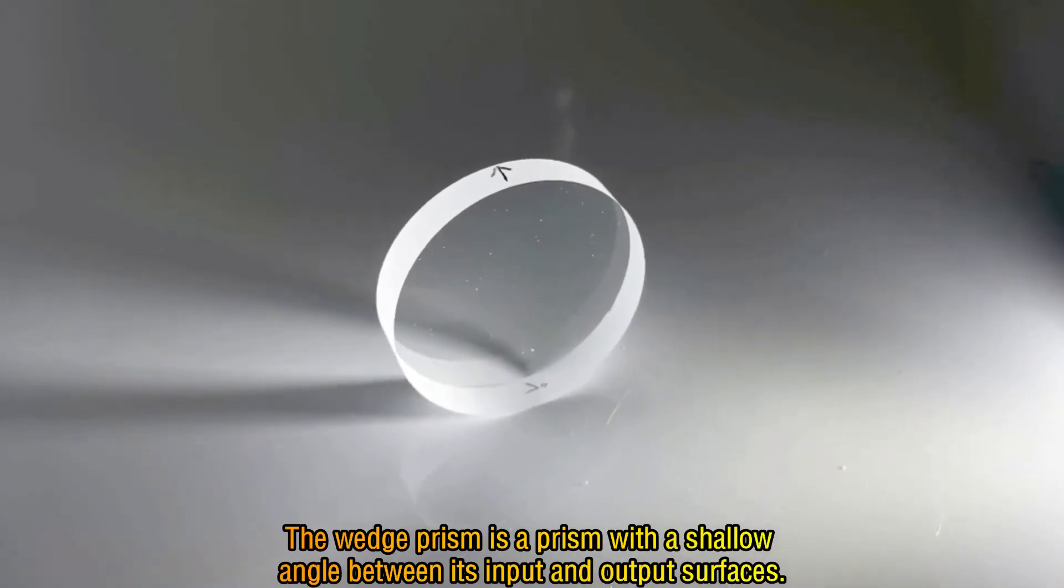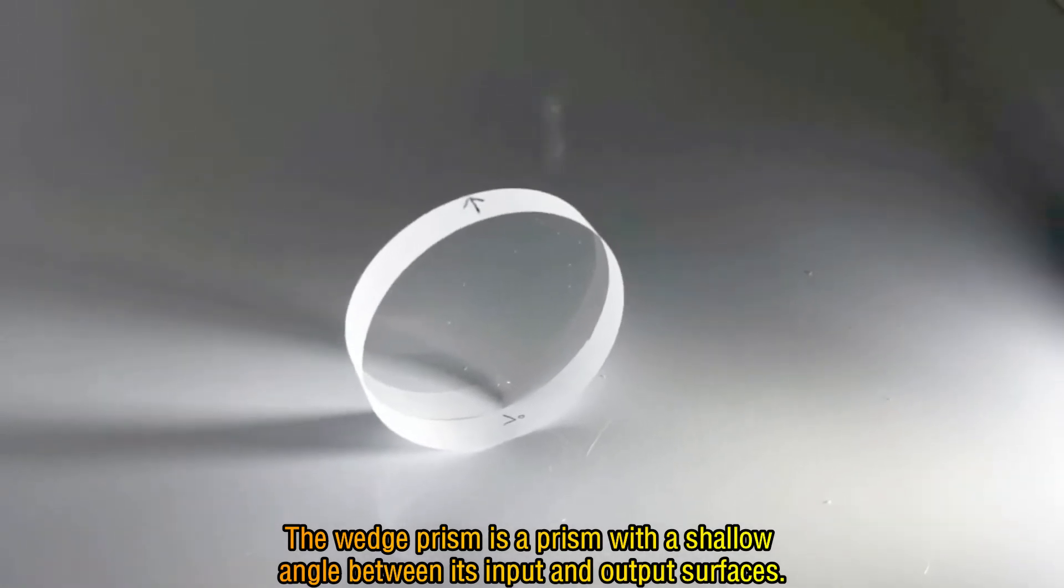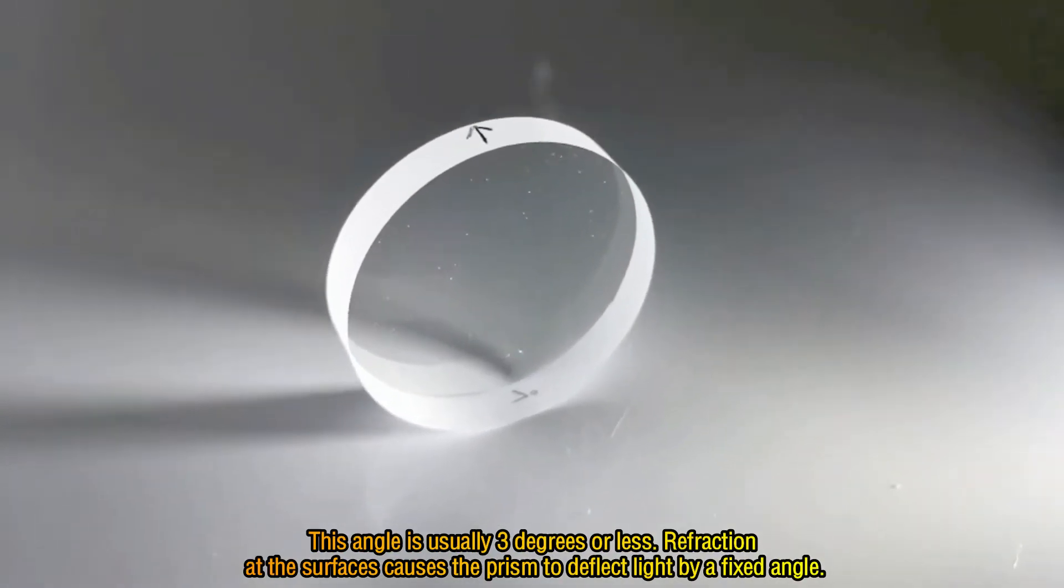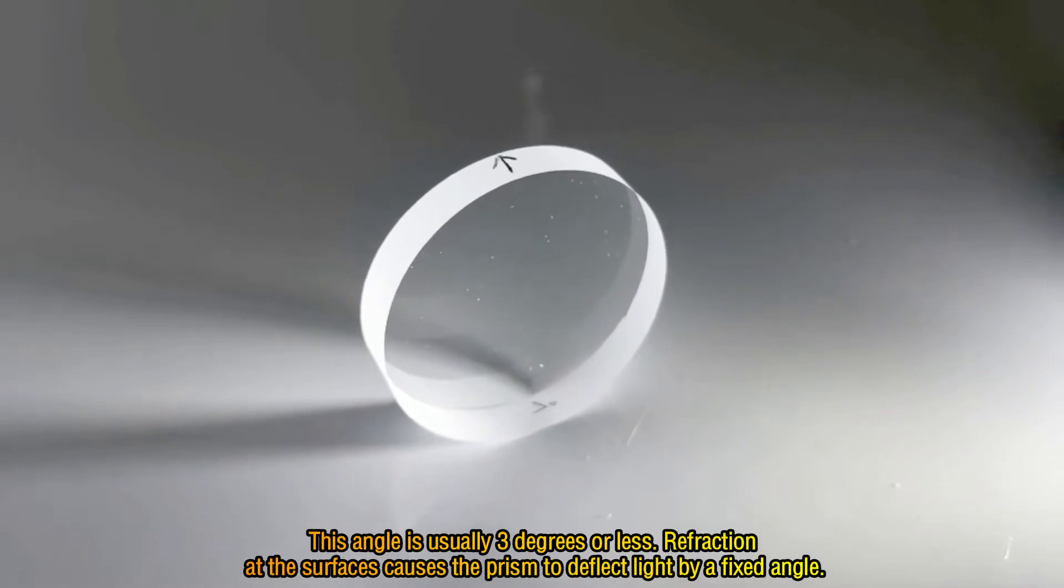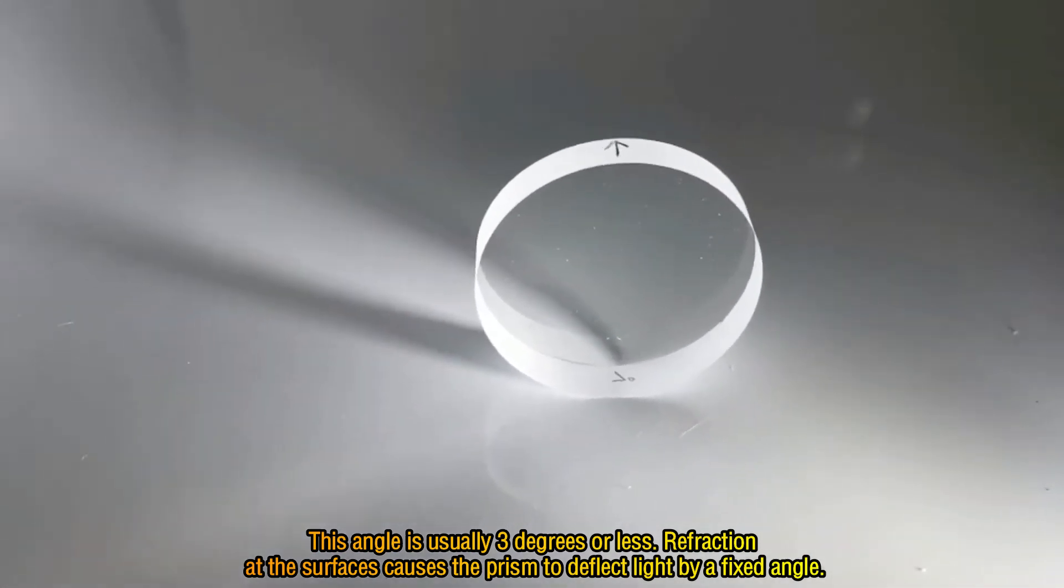The wedge prism is a prism with a shallow angle between its input and output surfaces. This angle is usually 3 degrees or less. Refraction at the surfaces causes the prism to deflect light by a fixed angle.